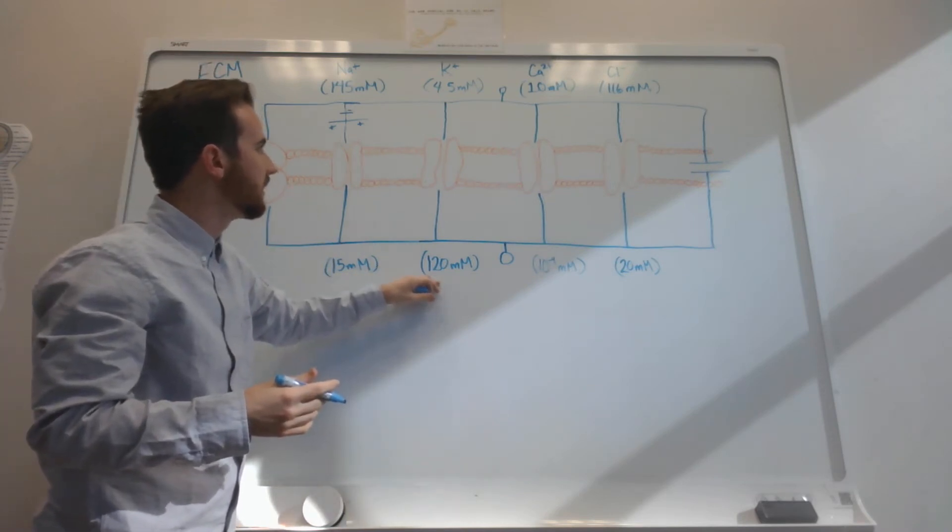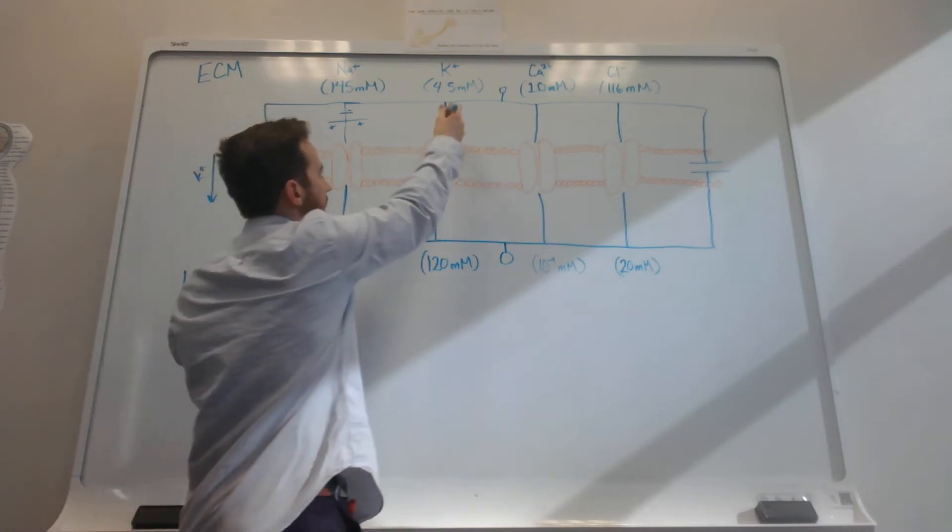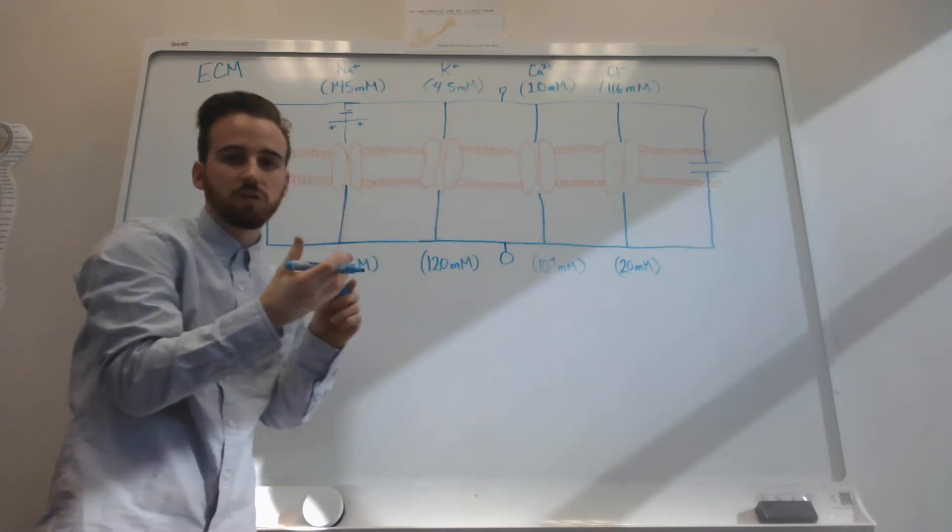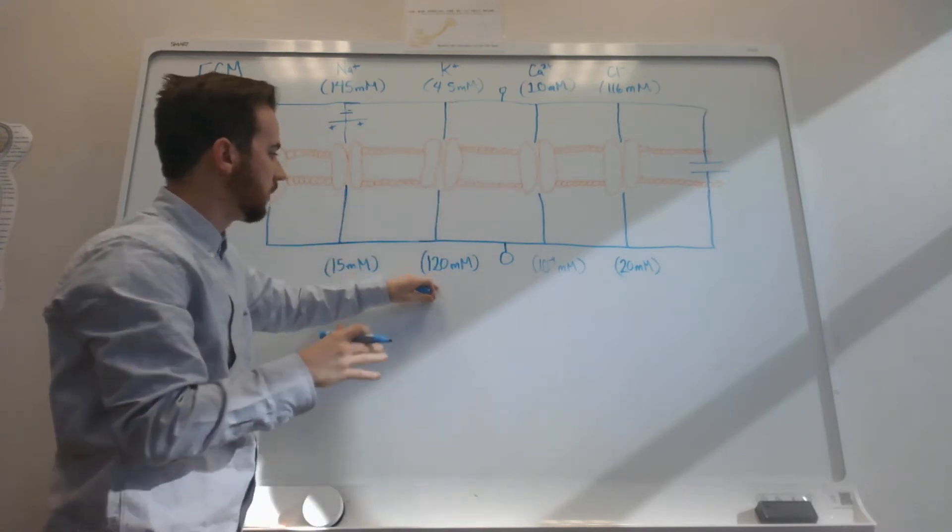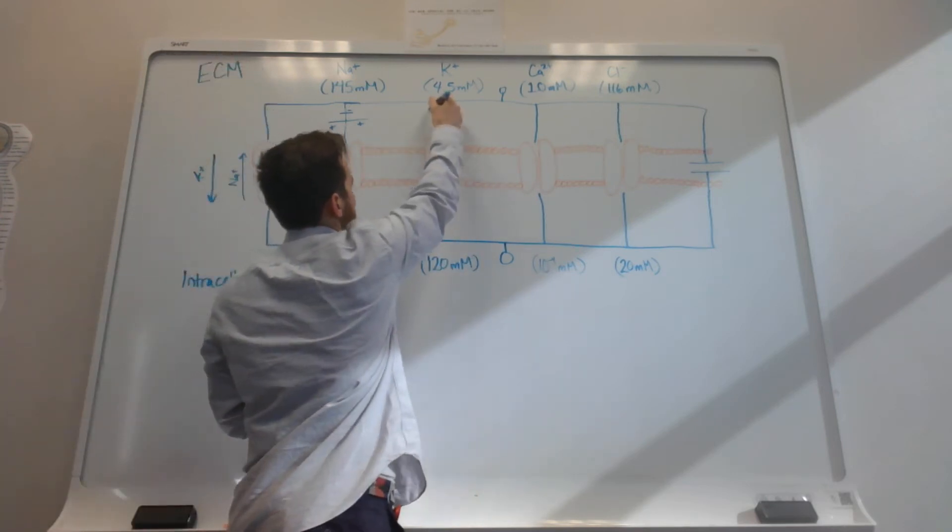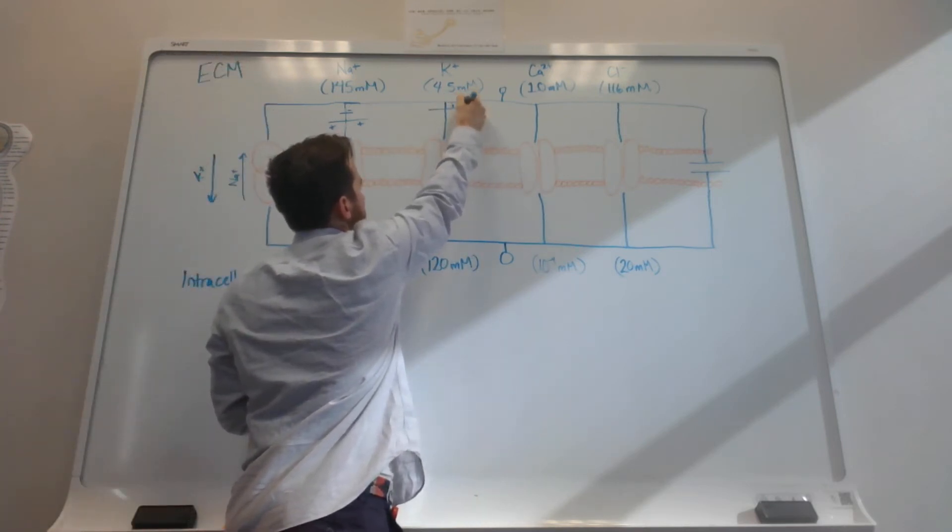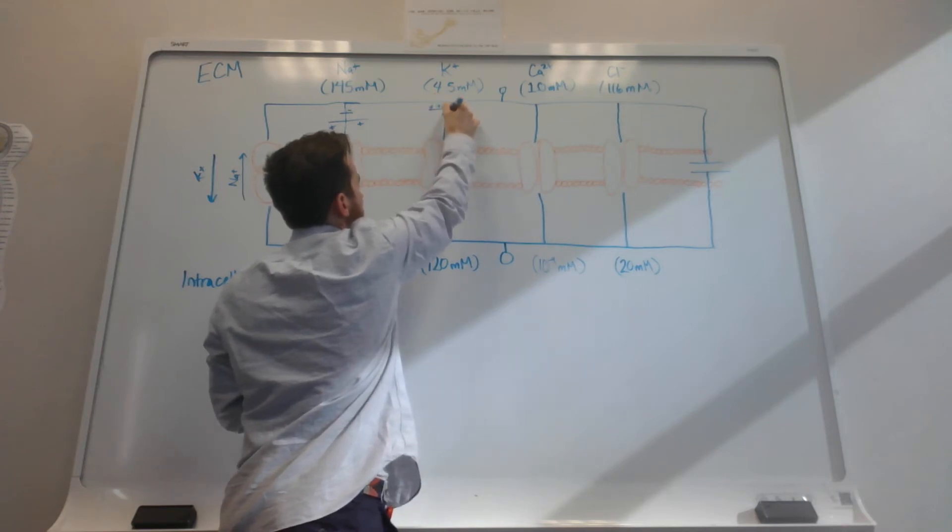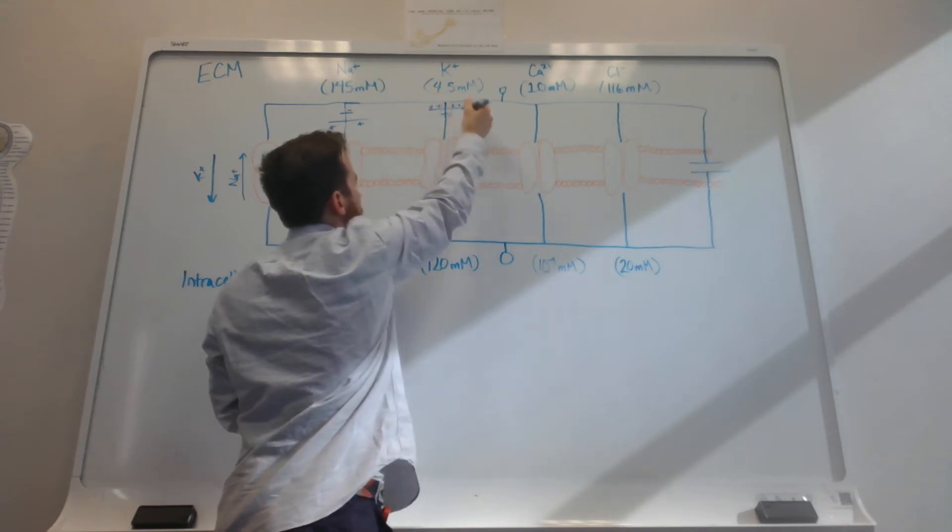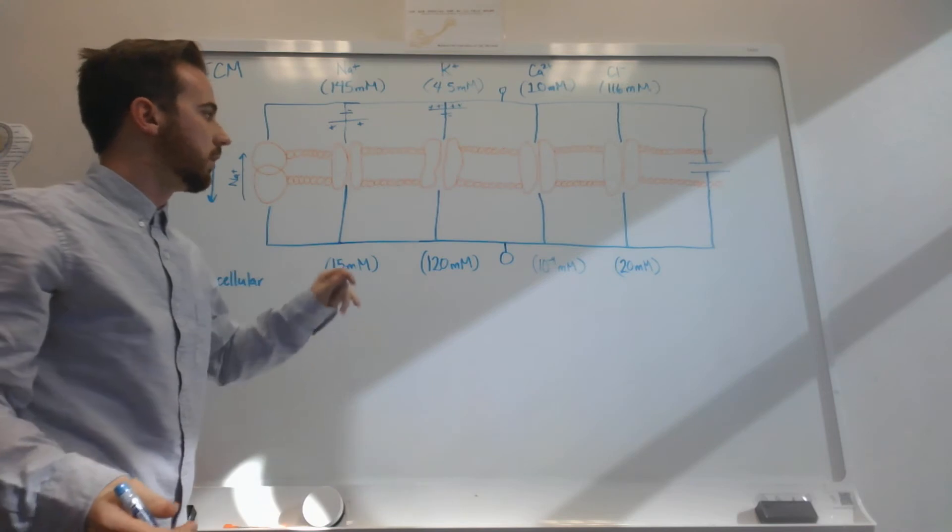Potassium, we have 120 millimolars inside and 4.5 millimolars outside. This is actually going to be the opposite, right? The positive charges are going to want to move outside of the cell, and our negative charges will stay inside the cell.